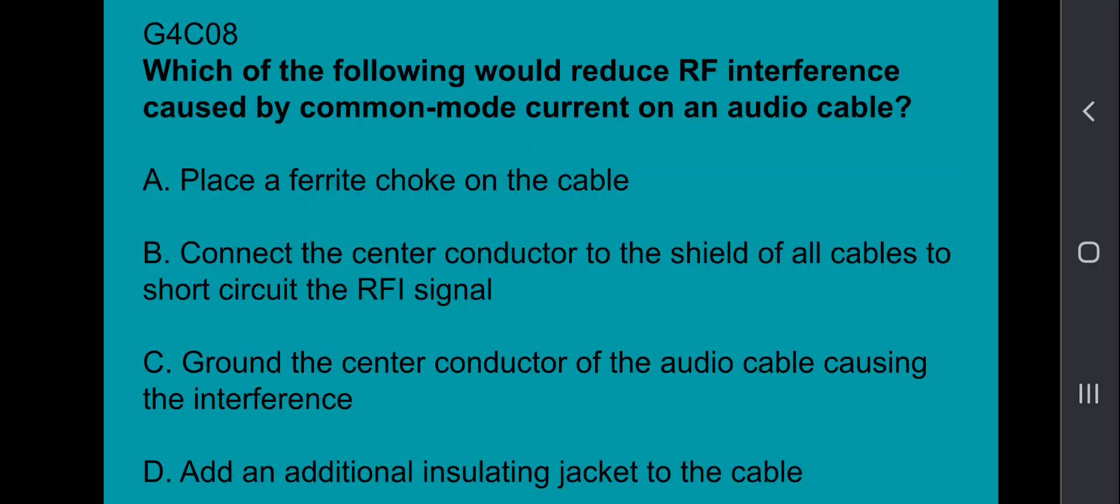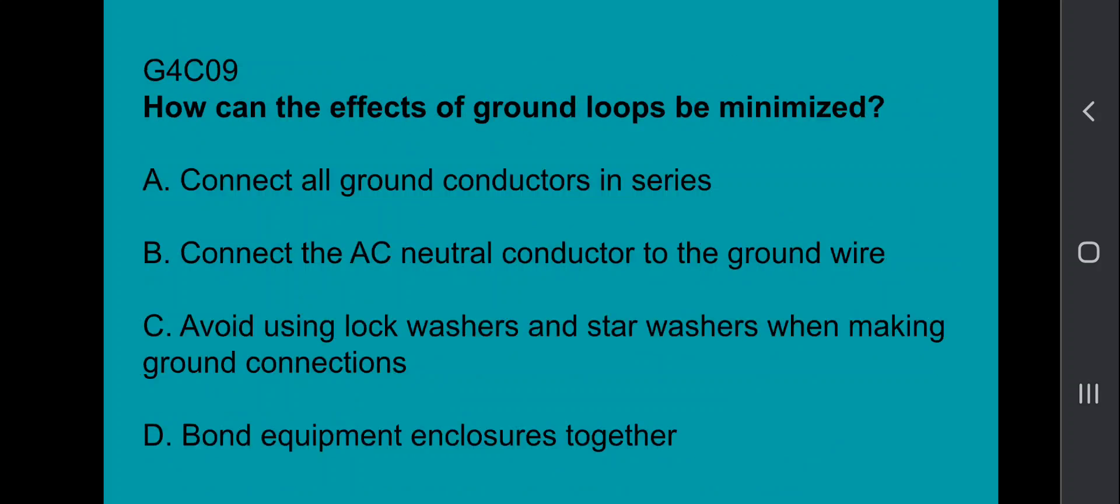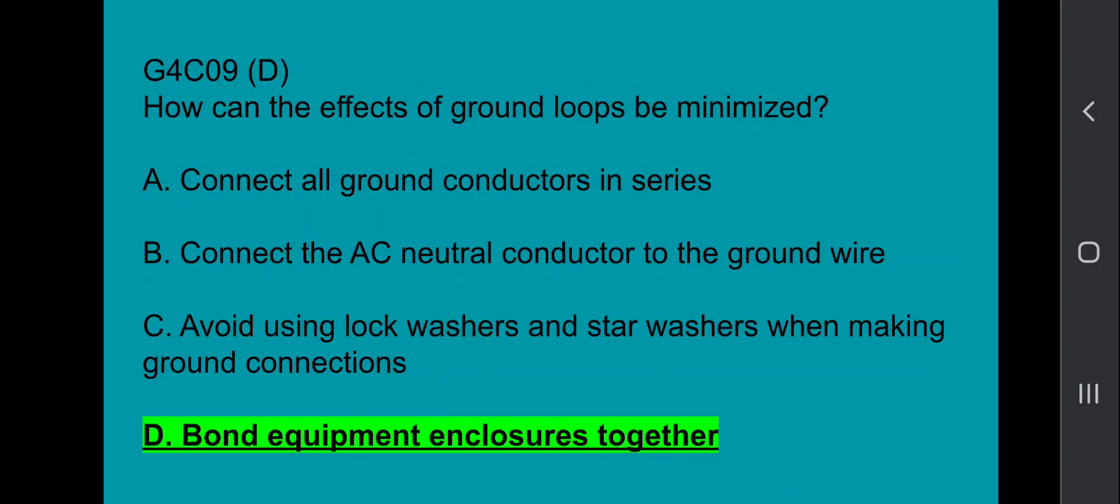G4C08, which of the following would reduce RF interference caused by common mode current on an audio cable? Place a ferrite choke on the cable. G4C09, how can the effects of ground loops be minimized? Bond equipment enclosures together.